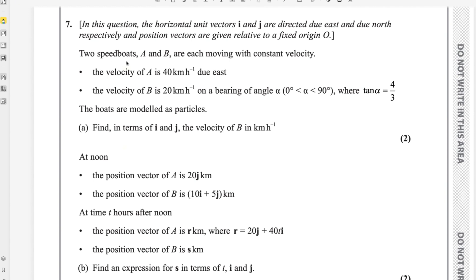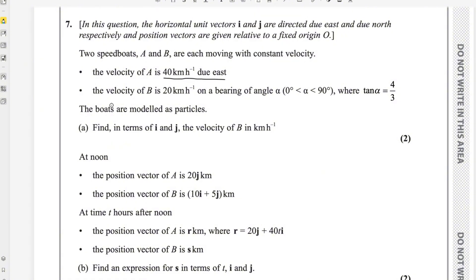Two speed boats A and B are each moving with constant velocity. The velocity of A is 40 km/h due east. The velocity of B is 20 km/h on a bearing of angle alpha, where alpha is between 0 and 90 degrees and tan alpha equals 4 over 3. The boats are modelled as particles. Find, in terms of i and j, the velocity of B in kilometres per hour.